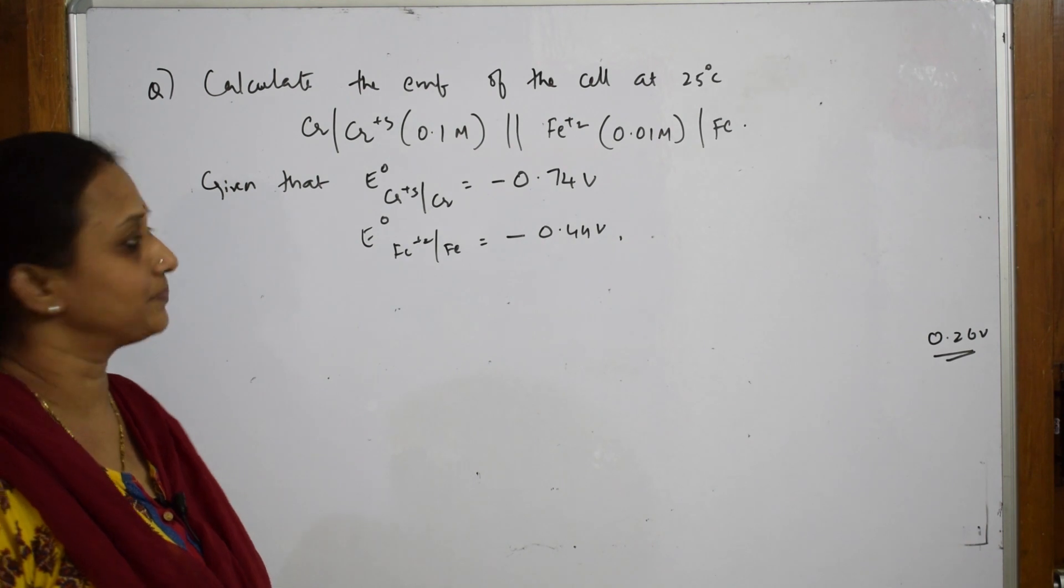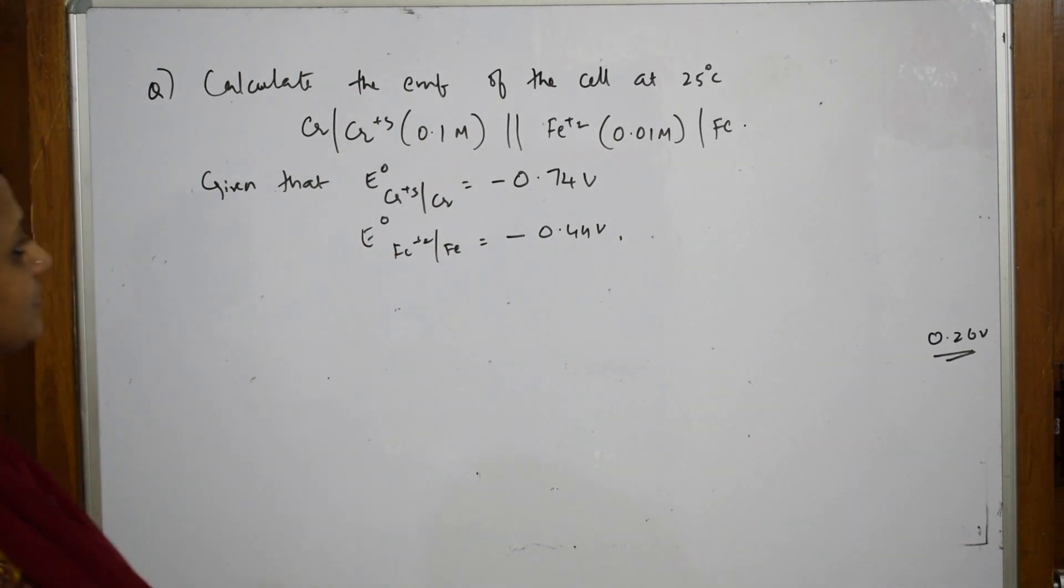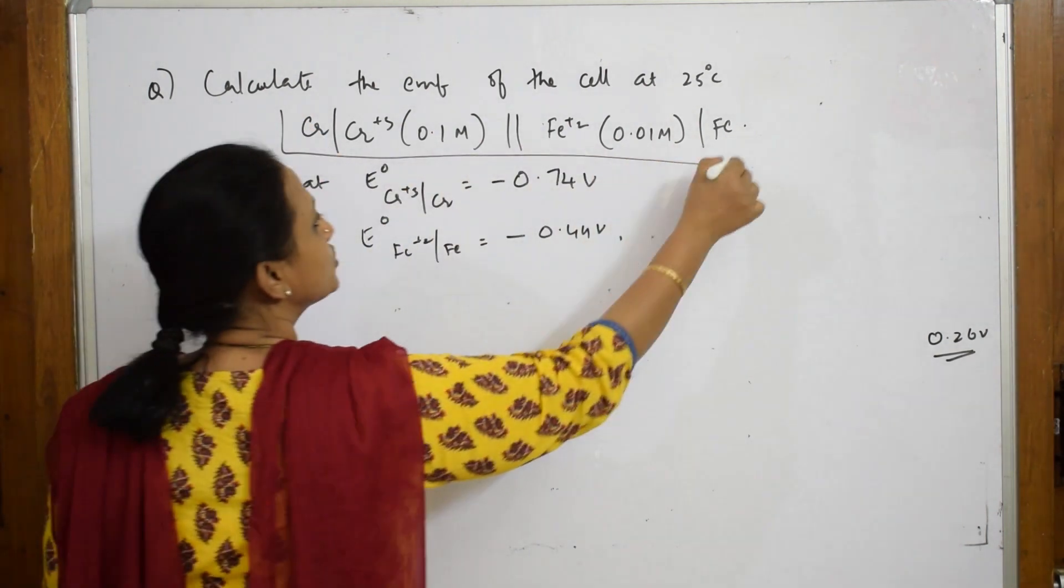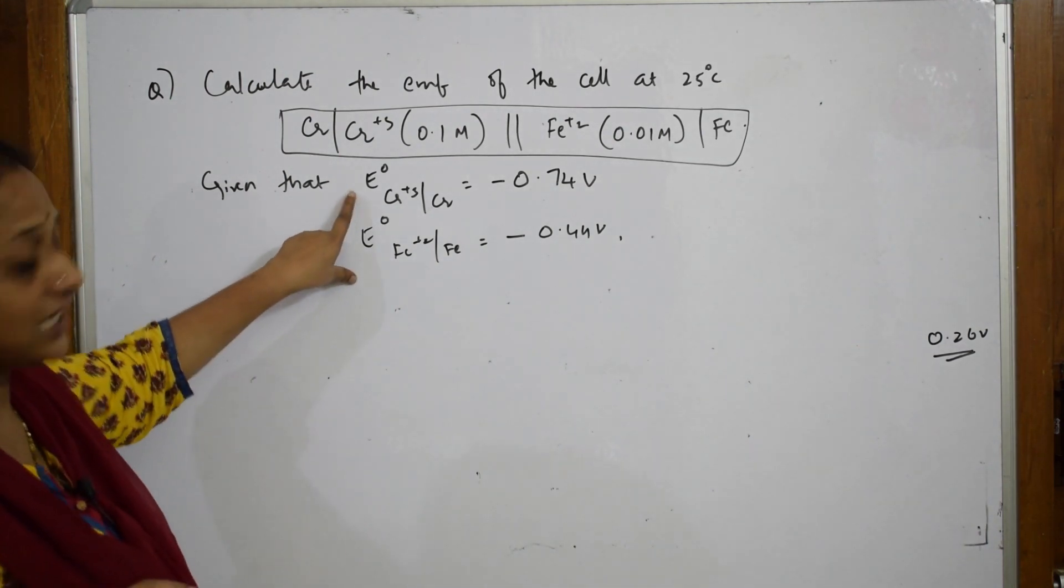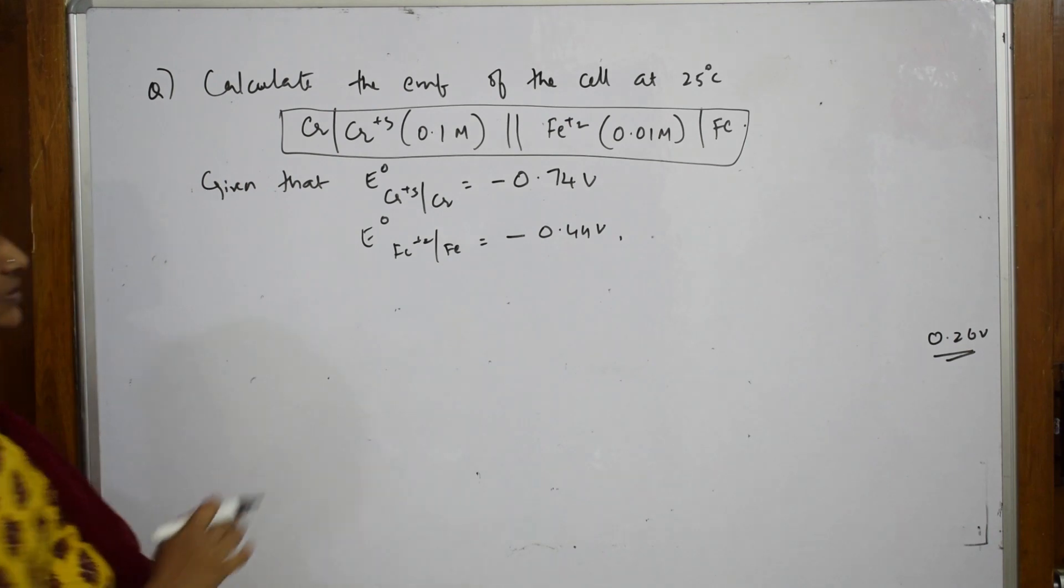We need to calculate E_cell for the given cell notation at 25 degrees. They've given the cell notation, which is the most important thing to remember, and the electrode potential values for both chromium and iron.